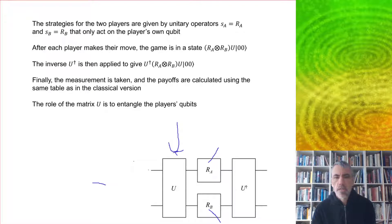Then each of the two qubits are acted on by the individual strategies, and then we apply the inverse over here, which ensures that if you put a classical strategy in, you get a classical strategy out at the end. Then we'll calculate the payoffs in the same way as in the classical version.